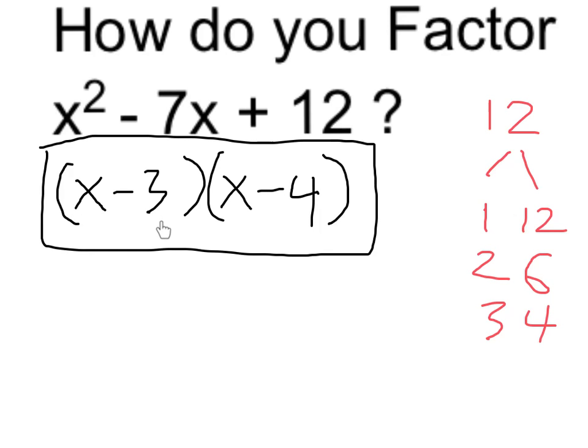That's it. This expression, x minus 3 and x minus 4, is algebraically equivalent to this trinomial. It's in factored form because now it's written as one thing times another.